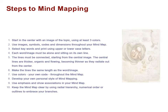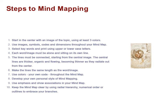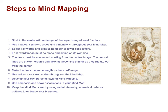How to mind map. First, you start in the center with an image of a topic. Have at least three colors. Use images, symbols, codes, and dimensions throughout your mind map. Select keywords and print using upper and lowercase letters. Each word and image must be alone and sitting on its own line. Lines must be connected, starting from the central image. Make the lines the same length as the word. Use colors or make up your own code throughout your mind map. Develop your own personal style. Use emphasis, show associations, and keep the mind map clear by using a radial hierarchy.